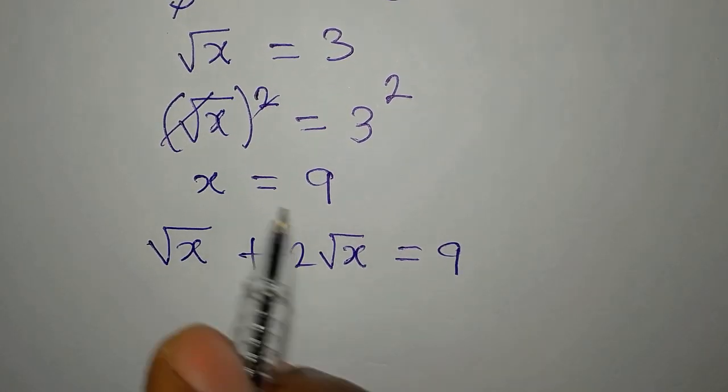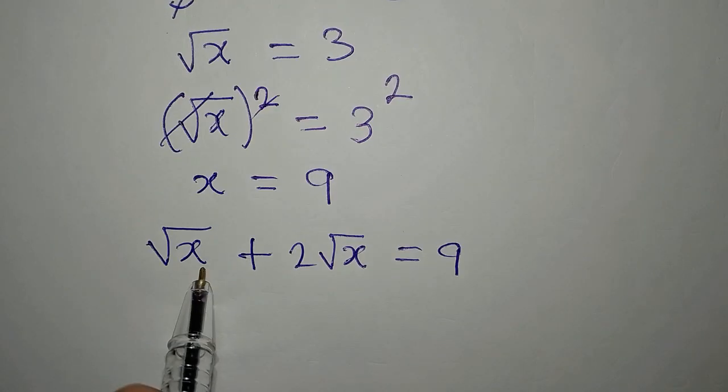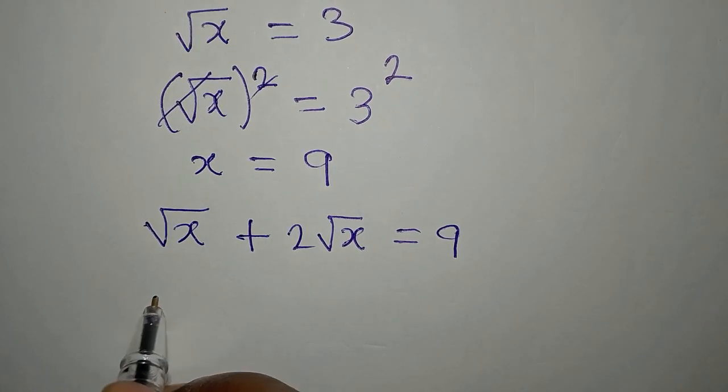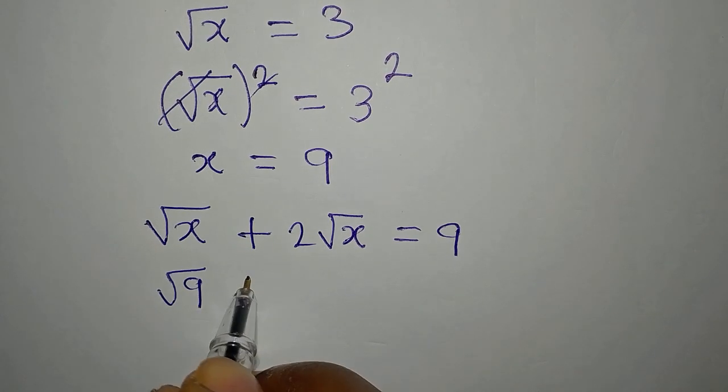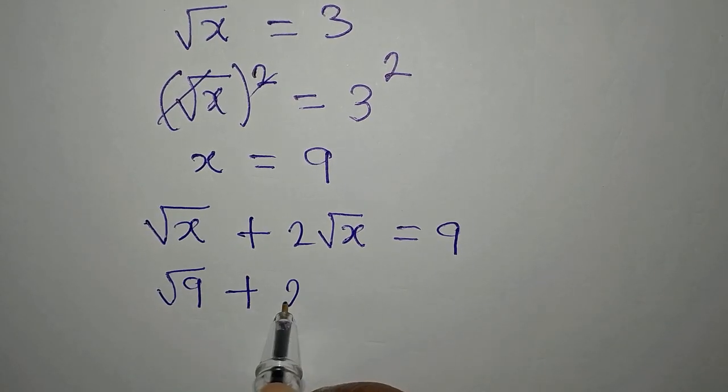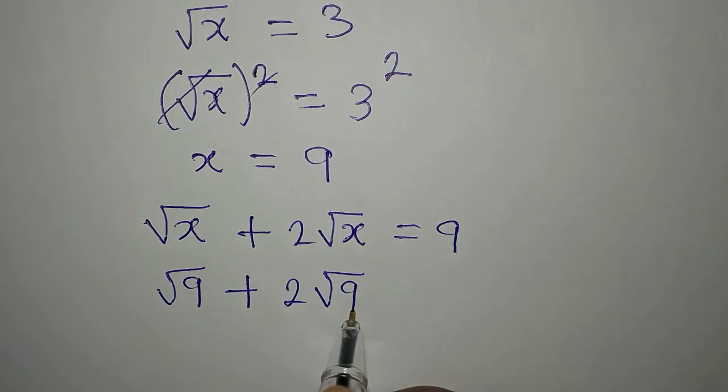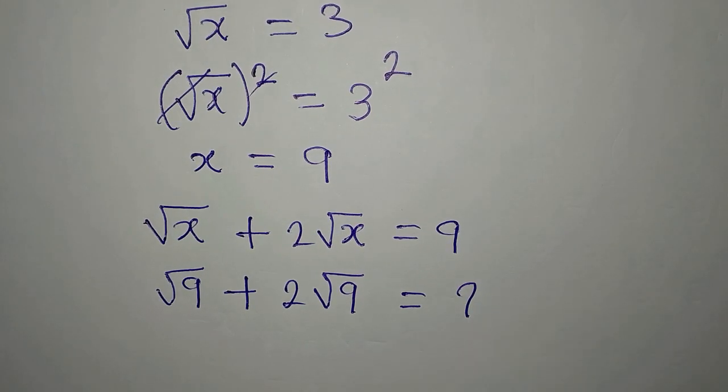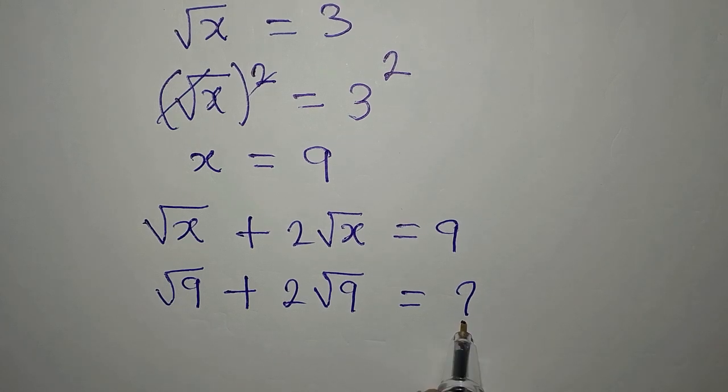So what we are going to do now is to put this into this equation. Remember we are trying to verify. So we have square root of 9 because x is 9, then we have 2 square root of 9. Now will this be equal to 9? That's what we are looking at right now.